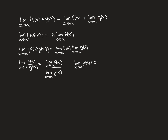The second result is that if you create a new function by taking one of the pre-existing functions, f(x), and multiplying it by some real number lambda, and you ask what is the limit as x approaches a of lambda times f(x), that equals lambda times the limit as x approaches a of f(x).